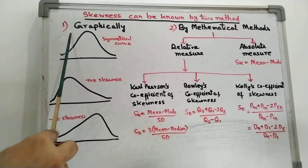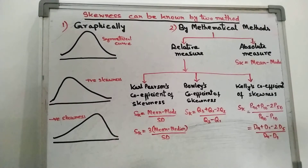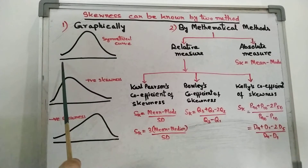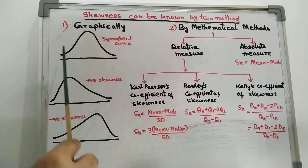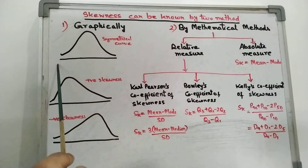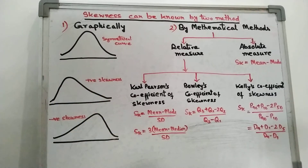Let us begin with the first one, which is the graphical method. For that, draw a frequency curve by plotting the points for variate values and corresponding frequency. Variate values — that means x values — are taken along the x-axis and y, which is the frequency, along the y-axis. Just draw a curve, then judge by naked eyes whether the tails of the curve are symmetrical or not.